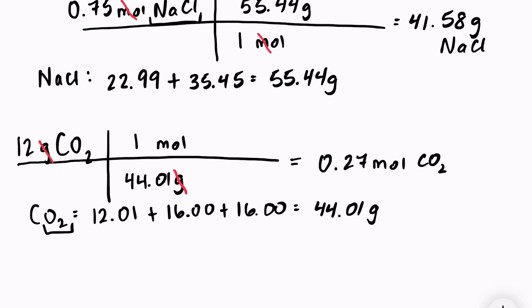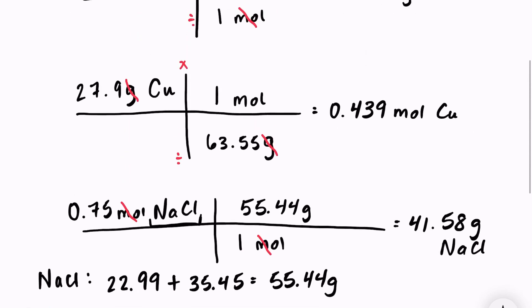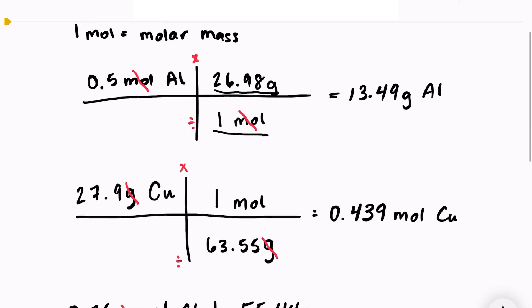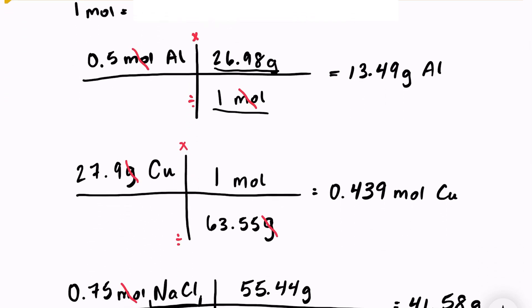So converting between grams and moles is one of the easiest unit conversions, because all that you have to do is look at the periodic table. You don't need to worry about Avogadro's number or anything else. You just need to look on the periodic table to find the mass of your element, and you just need to know whether your mass needs to go on the top or the bottom of your fraction. And again, if we're starting with moles, moles will always go on the bottom because we want that unit to cancel. If we're starting with grams, that unit will go on the bottom because we want that unit to cancel.